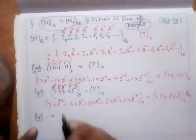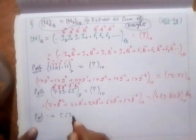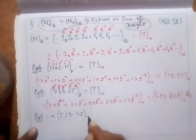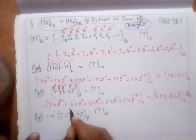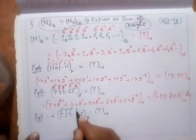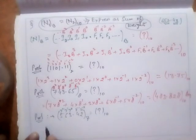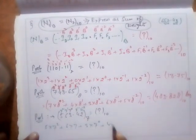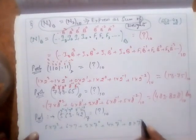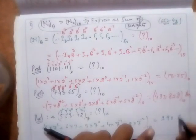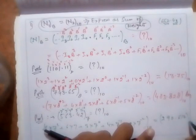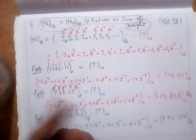Let's take another example with a random base. Convert 563.42 in base 7 to base 10. Base 7 means digits from 0 to 6. Assign weights: 7², 7¹, 7⁰ for the integer part, and 7⁻¹, 7⁻² for the fractional part. The expression is: 5×7² + 6×7 + 3×7⁰ + 4×7⁻¹ + 2×7⁻². Solving this gives 290.612 in base 10.